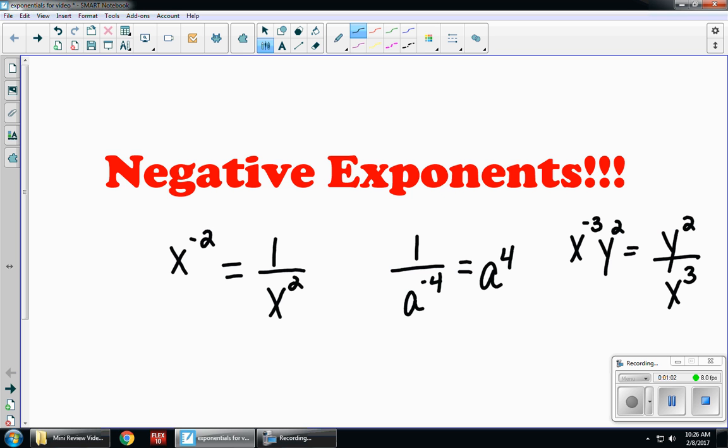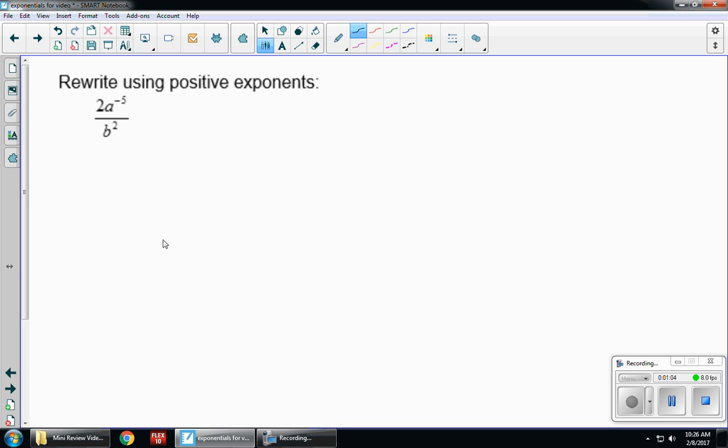Let's take a look at some practice problems. Rewrite using positive exponents. I have 2a to the negative 5th over b squared. The only negative exponent is the a, so that's the only piece that's going to be moving.